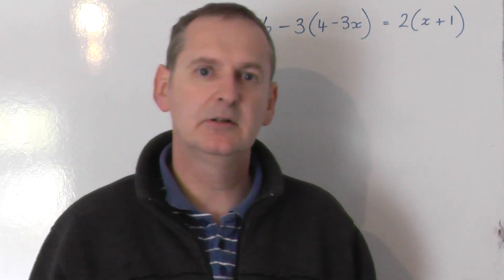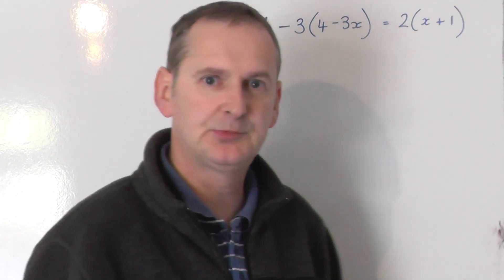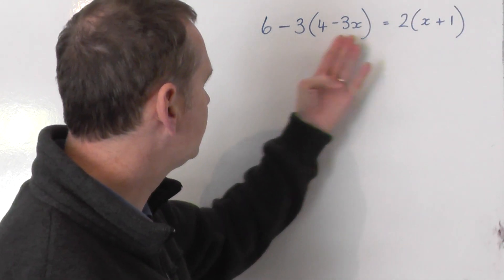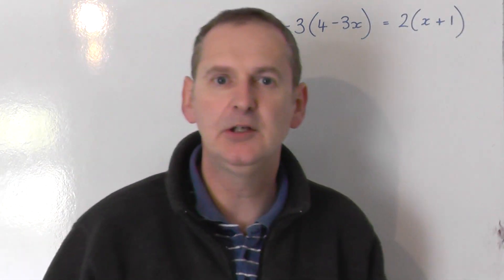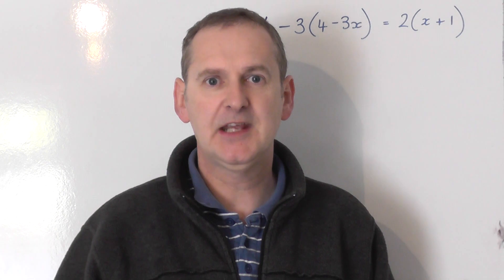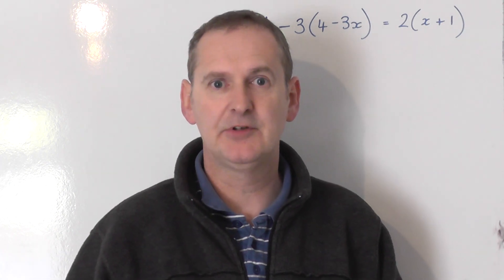We're going to solve this complicated looking equation which has got two sets of brackets within it, one on the left hand side and one on the right hand side of the equals. The first job is to get rid of the brackets by expanding out those brackets.